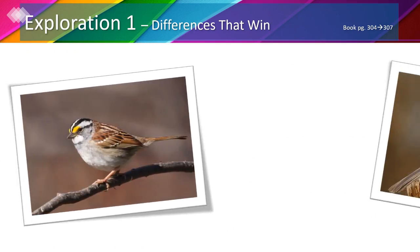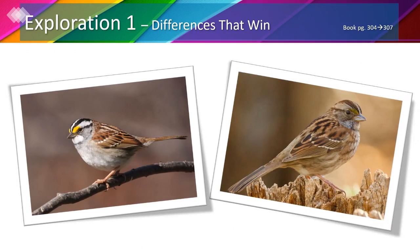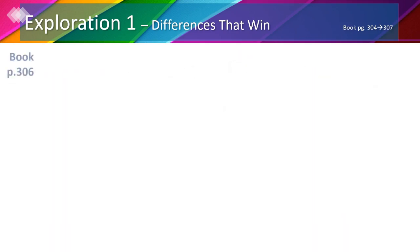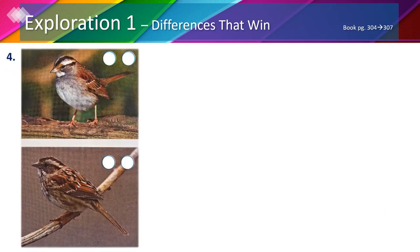Now if we look at these two sparrows, we notice they have different colors and patterns. The sparrow on the left has white stripes on its head — that's why it's called a white striped sparrow. The one on the right has tan stripes, so it's called a tan striped sparrow. These differences affect their chances of reproducing. On page 306 number 4, we're going to match sparrow characteristics with the correct type of sparrow.